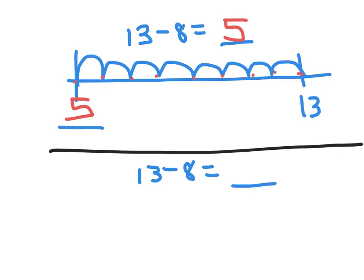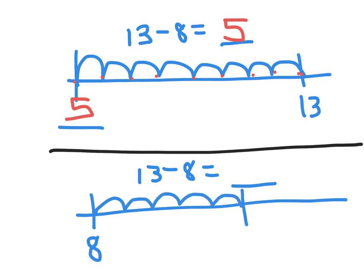I could also count up from the number 8. So I start at 8 and now I'll count to 13: 8, 9, 10, 11, 12, 13. I have to go back and count every jump to determine the answer: 1, 2, 3, 4, 5.